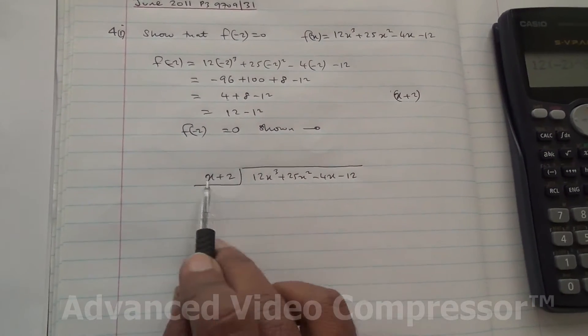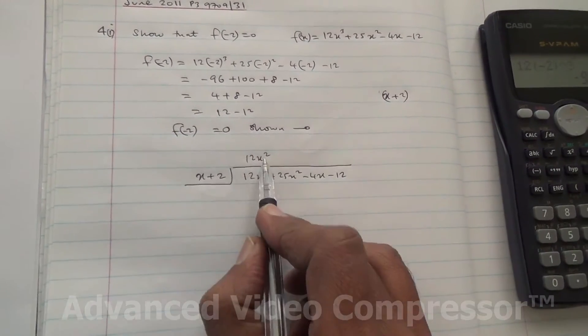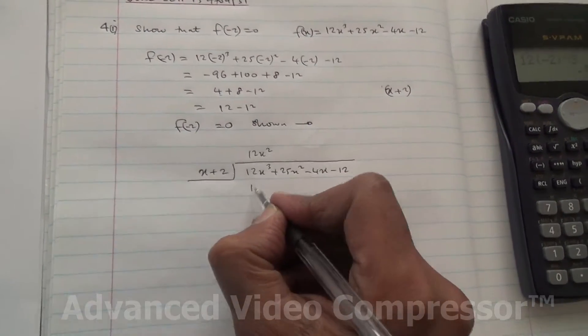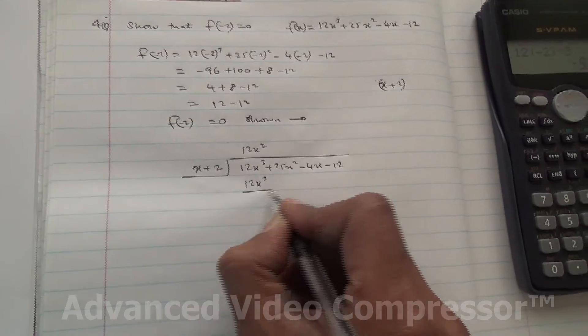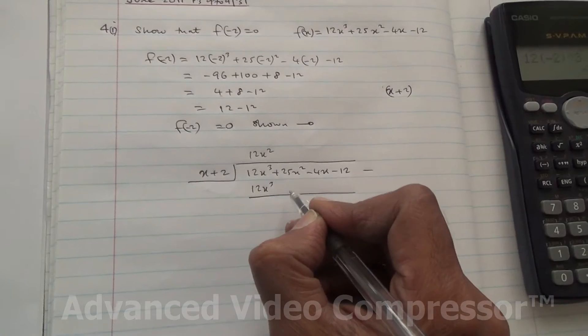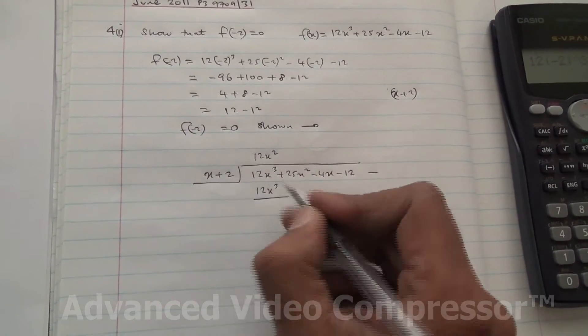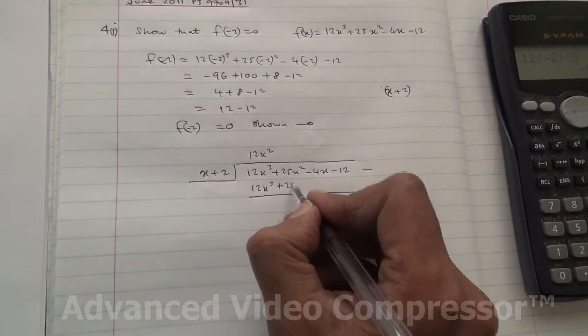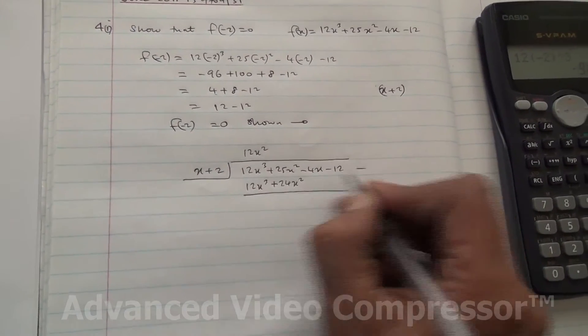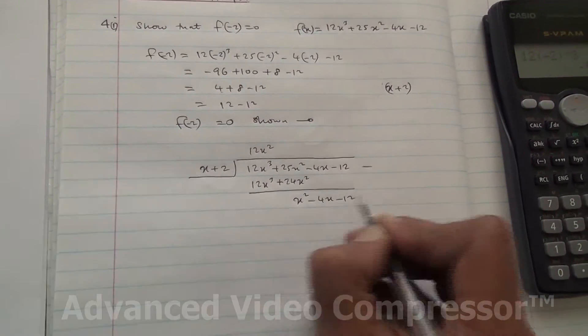12x cubed divided by x is 12x squared. 12x squared times x is 12x cubed. Subtract that. These two cancel out. And you are going to end up with 12x squared times 2 is 24x squared. So 25x squared minus 24x squared is x squared minus 4x minus 12.